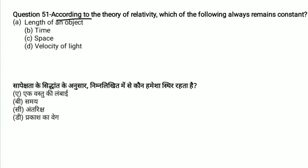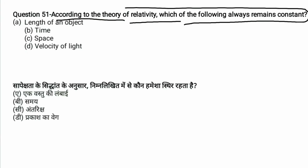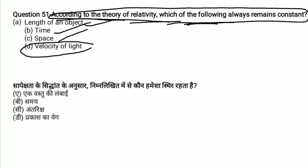According to the theory of relativity, which one of the following remains constant? The options include length of object, time, space, and velocity of light. The answer is D — velocity of light remains constant.